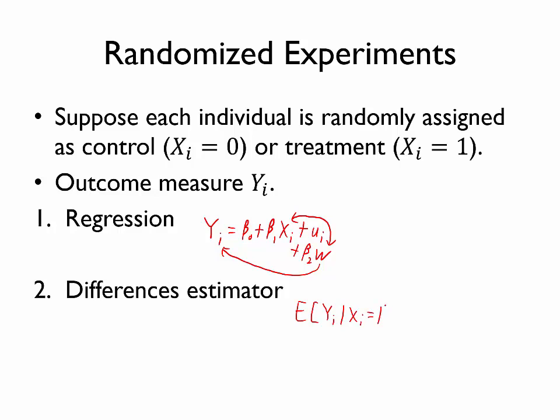In other words, conditional on being and having Xi equals 1. And then we're going to subtract off the expected value of that outcome conditional on Xi being equal to 0. In other words, being in the control group.